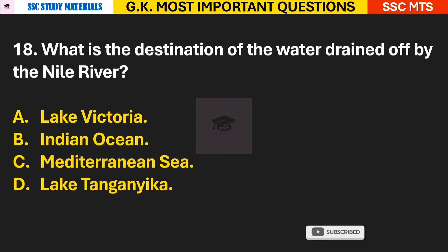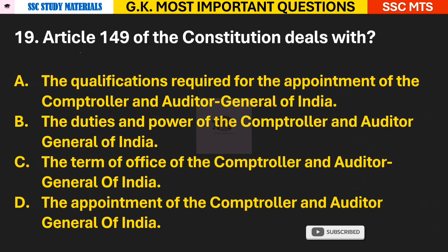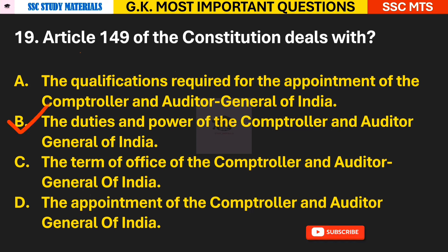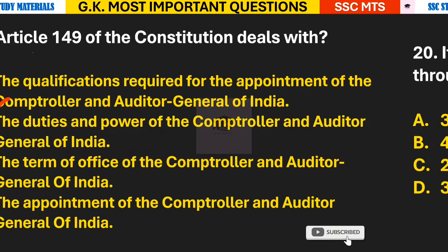Question 18: What is the destination of the water drained off by the Nile River? Answer C — the Mediterranean Sea. Question 19: Article 149 of the Constitution deals with what? Answer B — Article 149 deals with the duties and powers of the Comptroller and Auditor General of India.